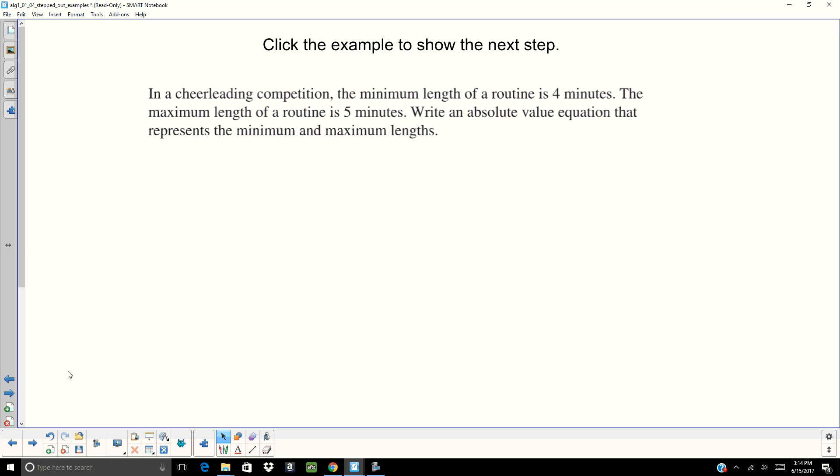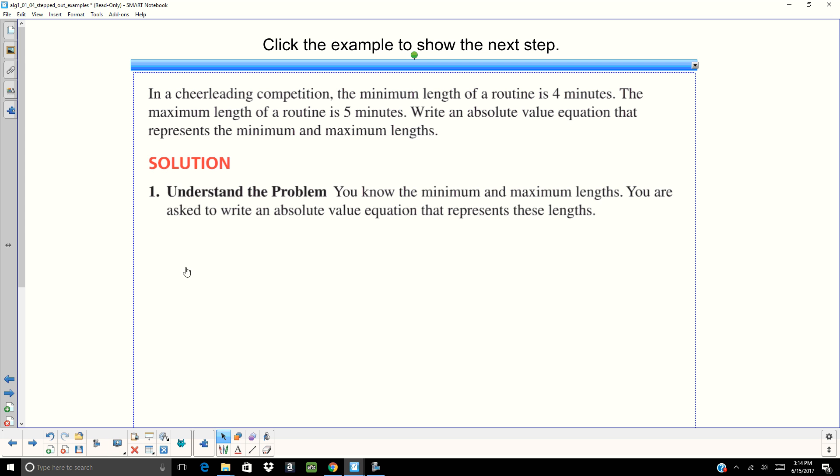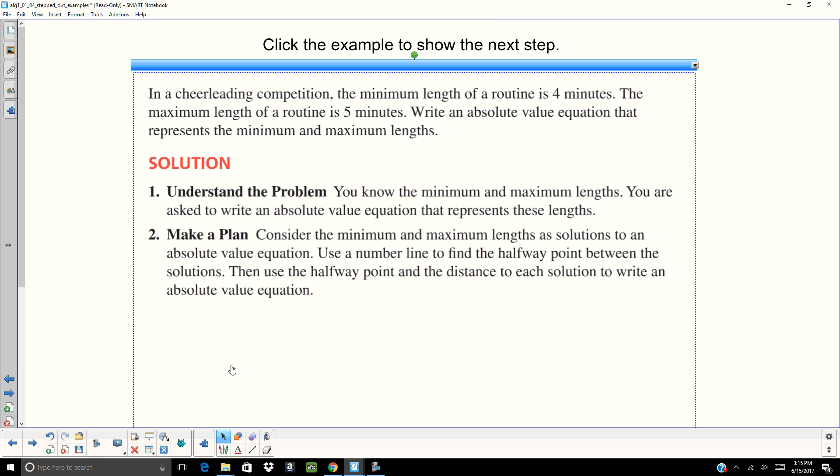All right, in a cheerleading competition, the minimum length of a routine is 4 minutes. The maximum length of the routine is 5 minutes. We want to write an absolute value equation that represents the minimum and the maximum lengths. So understand the problem. We know what's happening. You're given the minimum. You're given the maximum. We have to write an absolute value. That's the key right there.